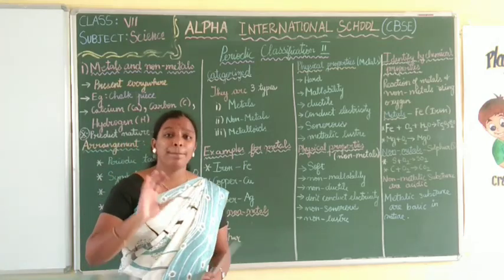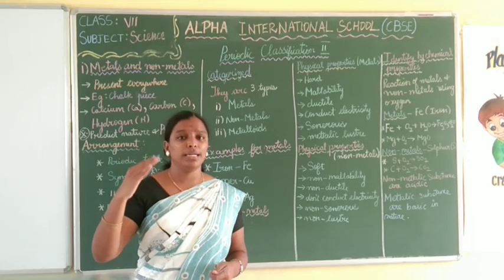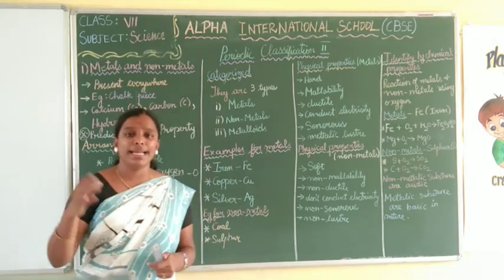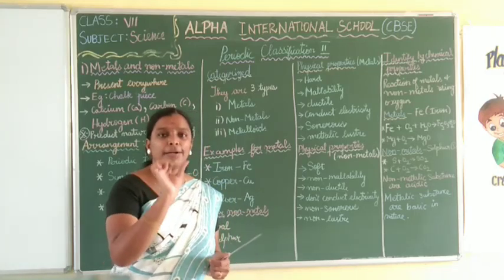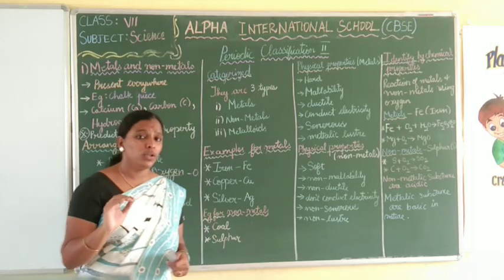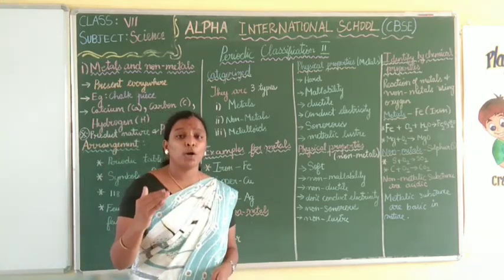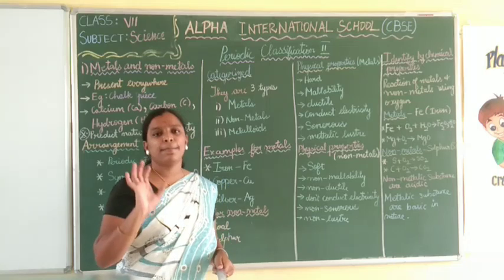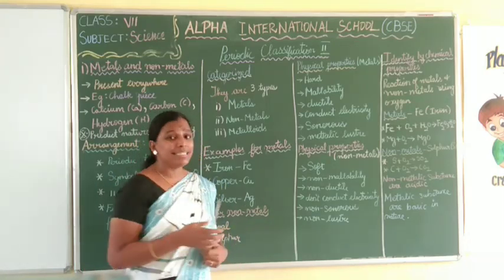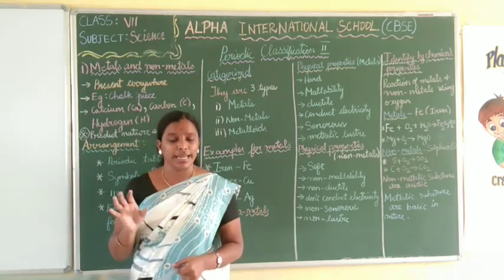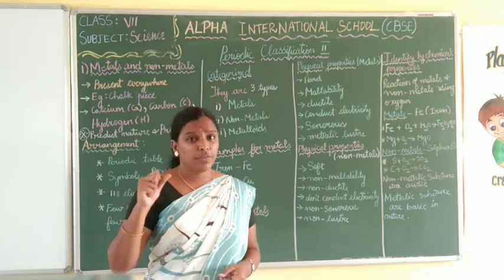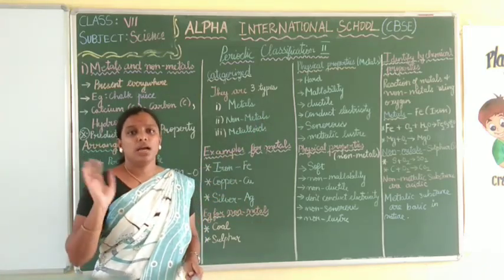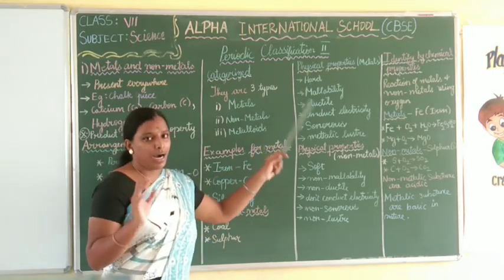Now we are going to see the physical properties of metals. We need to know the unique characteristics. The first physical property is that metals are hard. We know metal is iron, and iron is very hard and rough. So hardness is the first physical property of metals.